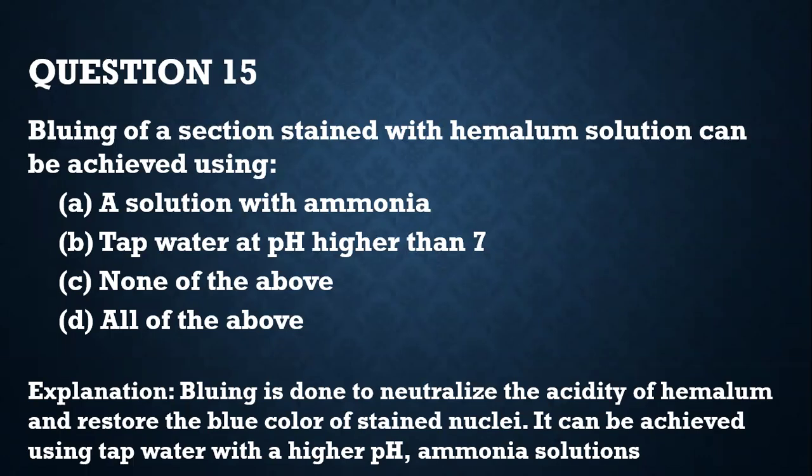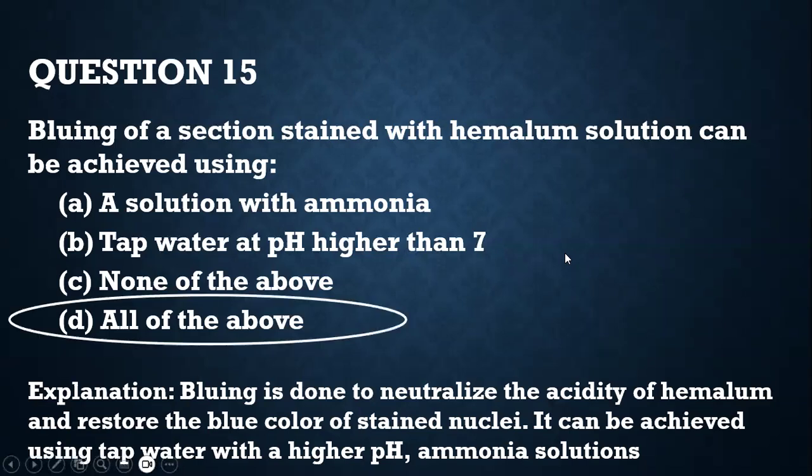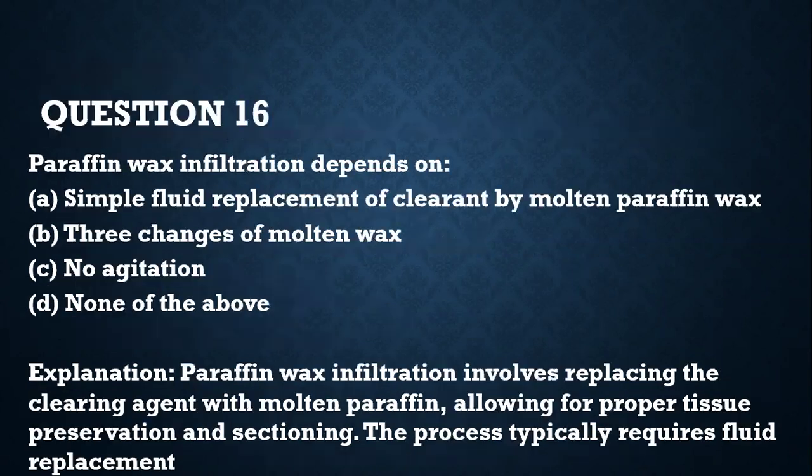Question 15. Bluing of a stained section stained with hematoxylin solution can be achieved by using: A — solution with ammonia; B — tap water at pH higher than 7; C — none of the above; D — all of the above. Bluing is done to neutralize the acidity of hematoxylin and restore the blue color of stained nuclei, achieved with either tap water of higher pH or ammonia solution — alkaline solutions.